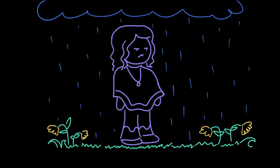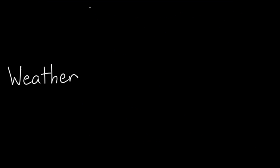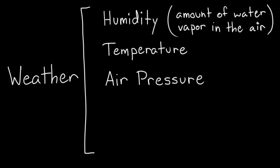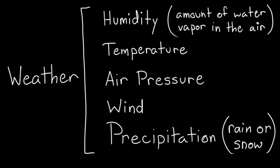Unfortunately, we can't control the weather. Weather changes from day to day and from place to place, so scientists have to consider a lot of different factors to understand it. Weather can refer to humidity, or amount of water vapor in the air, temperature, air pressure, wind, and of course precipitation, like rain or snow.